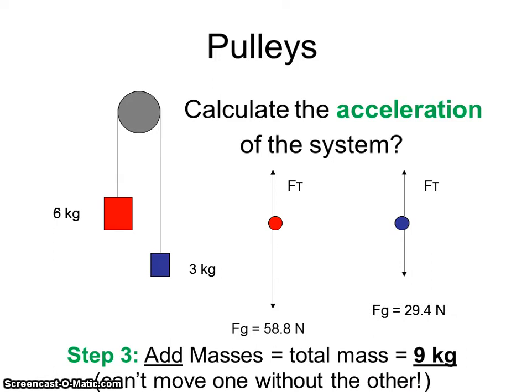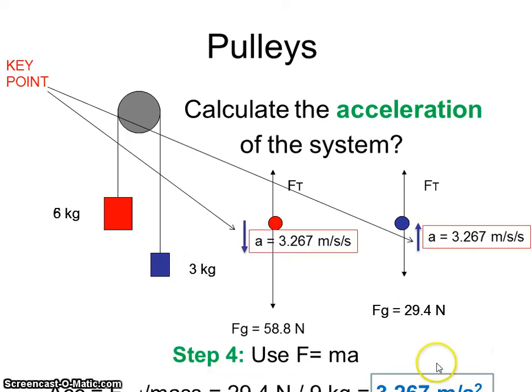What mass should we use? Well, just like before, they're attached by a string. You can't move one without moving the other. So you add the masses. In this example, 9 kilograms. So the mass is 9.